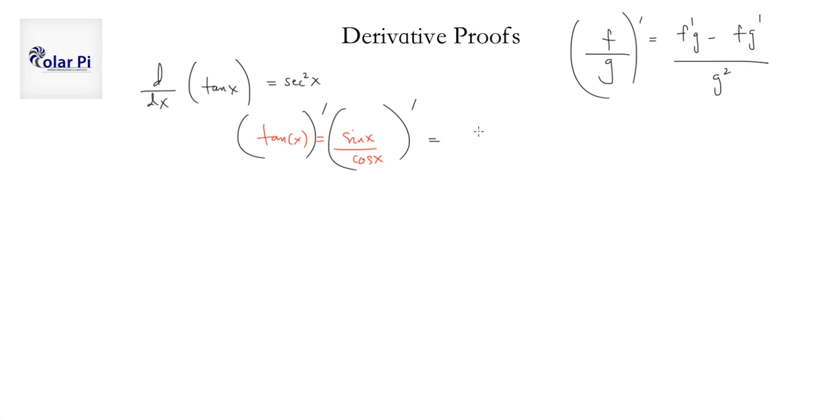So this is going to be the derivative of sine, which is cos x, and then times cosine, so cos x, minus f, which is sine, times the derivative of cosine, which is negative sine. You found that out a little earlier in the previous video. So you divide all of this by g squared, which is cos squared x.